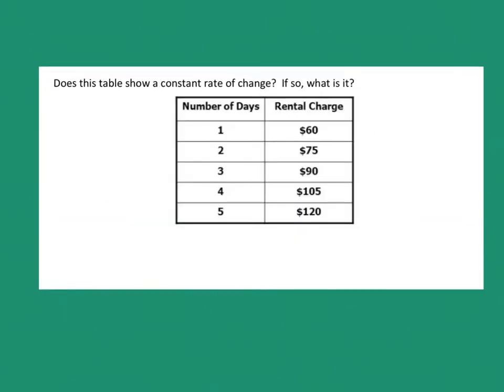This is our first example. It wants to know, does this table show a constant rate of change? And then if it does, we're going to say, what is the actual rate of change? So the first thing is normally the letters on the left when the table is going up and down are y.